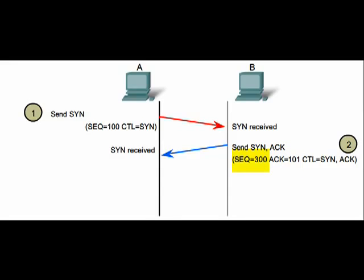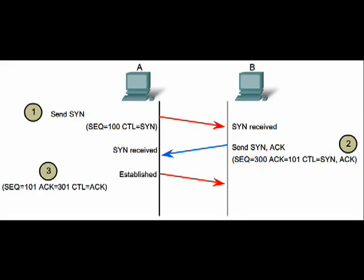At the same time, the destination sends its own synchronization sequence value. Finally, the initiating client responds with an acknowledgement value that is equal to the sequence value it received plus one. After this process of connection establishment, data can be sent. After the communication is completed, the sessions are closed and the connection is terminated.